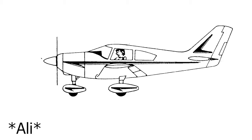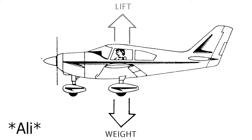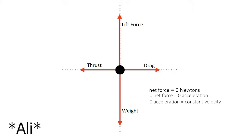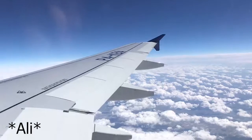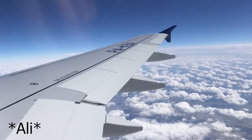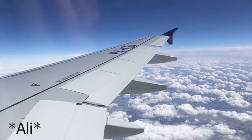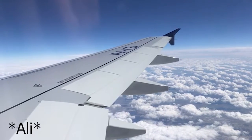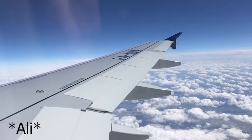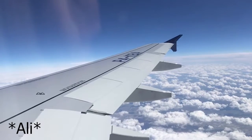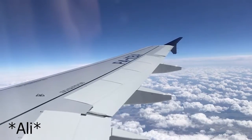There are four main forces that affect an aircraft during flight: weight, lift, drag, and thrust. We are able to fly because thrust and lift overpower weight and drag. In the horizontal flight phase, these forces cancel each other out, and by Newton's first law, the velocities become constant. Now, let's get a better understanding of each of these forces.